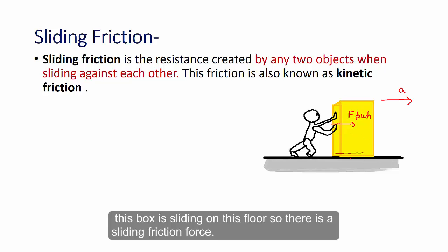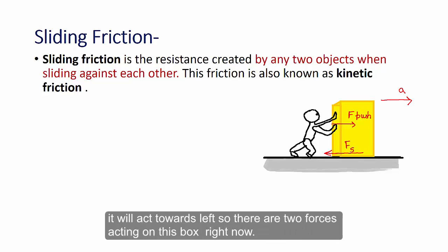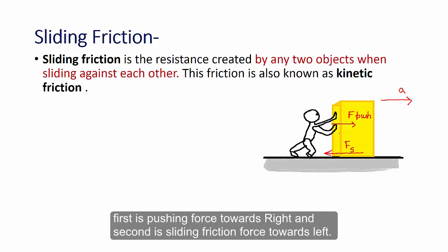This box is sliding on this floor. So there is a sliding friction force. So we can represent it as Fs. It will act towards left. So there are two forces acting on this box which is sliding right now. First is pushing force towards right and second is sliding friction force towards left.